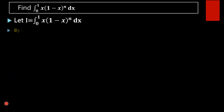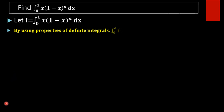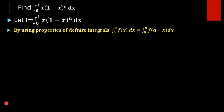By using the properties of definite integrals, we know that integral 0 to a of f(x) dx is equal to integral 0 to a of f(a minus x) dx. Using this property we can rewrite our integral.